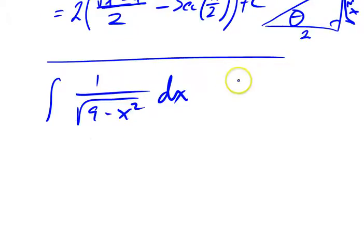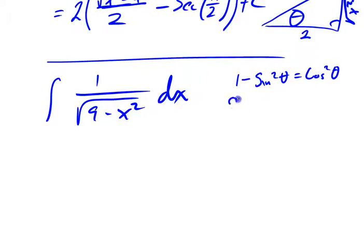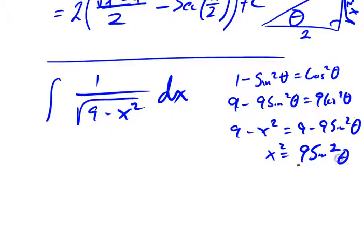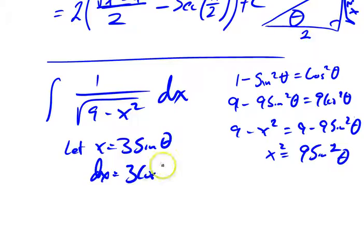So I'm looking at this 9 minus x squared thinking: if that was 1 minus x squared, I'd be thinking 1 minus sine squared theta is cosine squared theta. But it's a 9. So I want this multiplied by 9: 9 minus 9 sine squared theta equals 9 cosine squared theta. So my 9 minus x squared I want to be 9 minus 9 sine squared theta, which means x squared has got to be 9 sine squared theta. So let x equal 3 sine theta. Then dx is 3 cosine theta d theta.